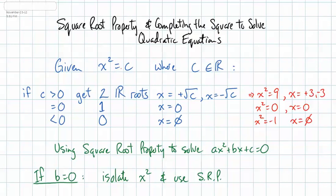To start, we need to remember something about squaring and the results that we get with squaring. If I have x squared equals some number c, and c is a real number, there's three different scenarios possible. c could be greater than 0, equal to 0, or less than 0.